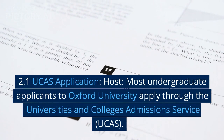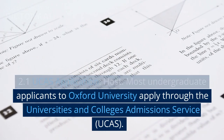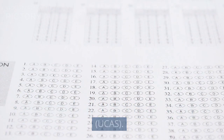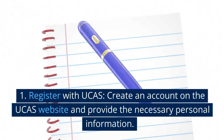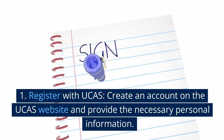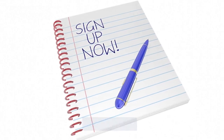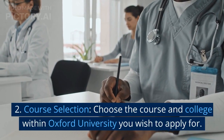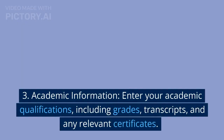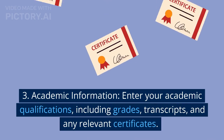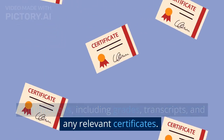2.1 UCAS Application: Most undergraduate applicants to Oxford University apply through the Universities and Colleges Admissions Service, UCAS. Follow these steps to complete your UCAS application. 1. Register with UCAS — create an account on the UCAS website and provide the necessary personal information. 2. Course Selection — choose the course and college within Oxford University you wish to apply for. 3. Academic Information — enter your academic qualifications, including grades, transcripts, and any relevant certificates.